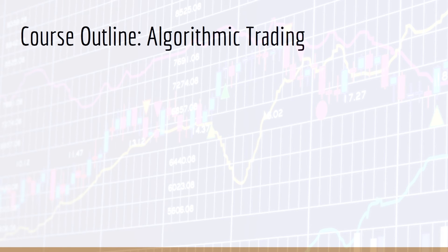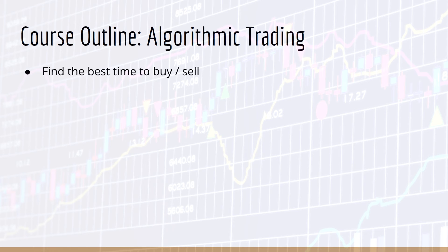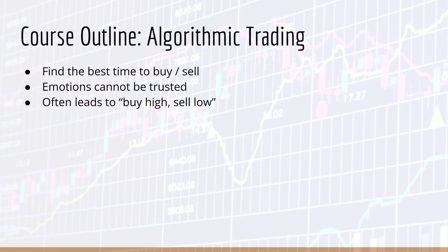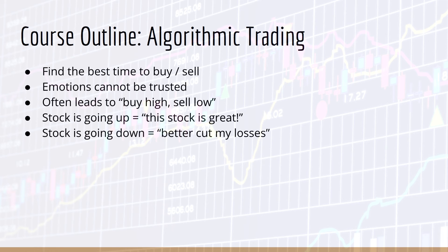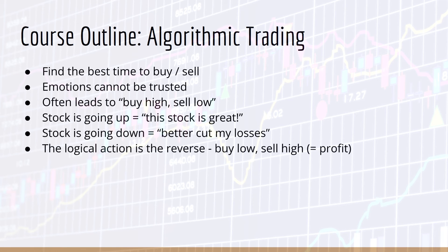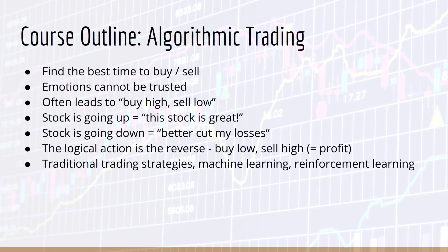In the next section, we are going to learn about algorithmic trading. Previously, when we looked at portfolio theory, it was all about which stocks to buy and which stocks to sell. In this section, it's all about determining when is the best time to buy and when is the best time to sell. If you try to use your emotions, you're going to have a bad time. When people use their emotions, they tend to buy high and sell low. They see a stock going up and they think it's a great deal; they see a stock going down and they get scared and cut their losses. This is the exact opposite of what we logically know we should do — we want to buy low and sell high. Algorithmic trading is all about how to automate buying and selling decisions so that you do not depend on your emotions, which are, let's face it, probably wrong. We will look at both traditional trading strategies, as well as those based on machine learning and reinforcement learning.